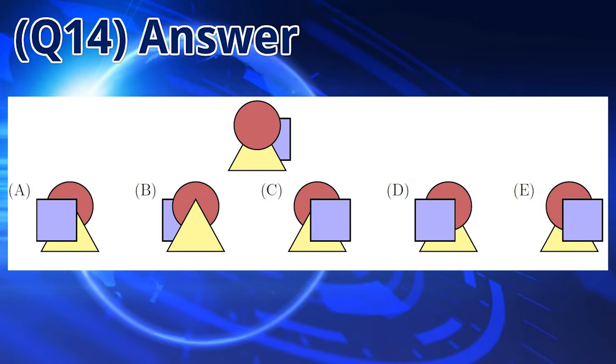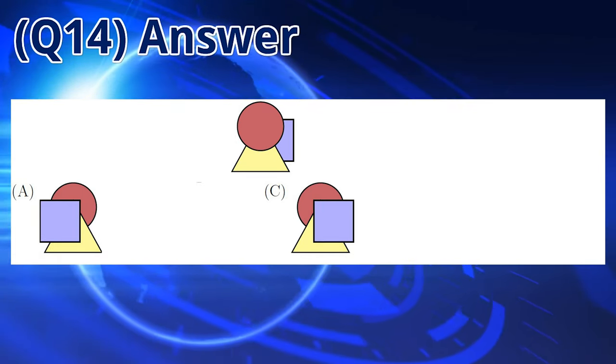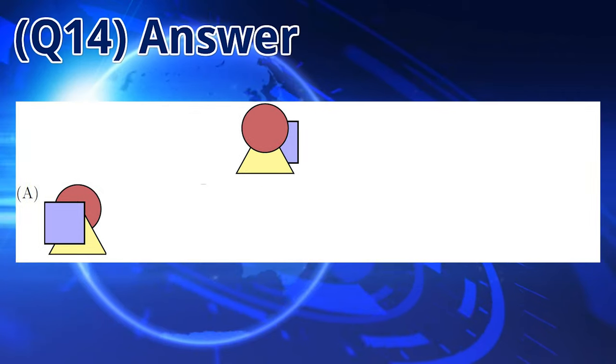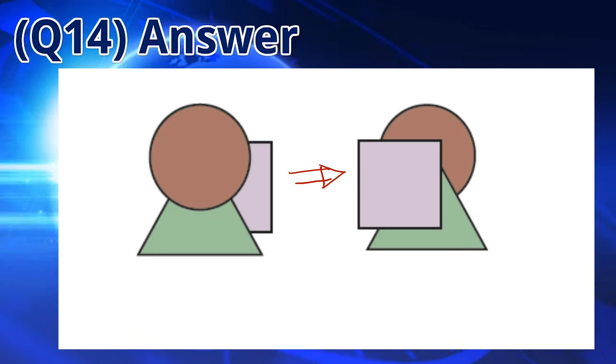In the original stack, the yellow triangle is on top of the blue square and under the red circle. Only A and C have this. Considering the position of the three shapes, the blue square is originally on the right side of the arrangement, so it will be the left side when flipped. Only A has all the shapes in the correct positions. So the answer is A.